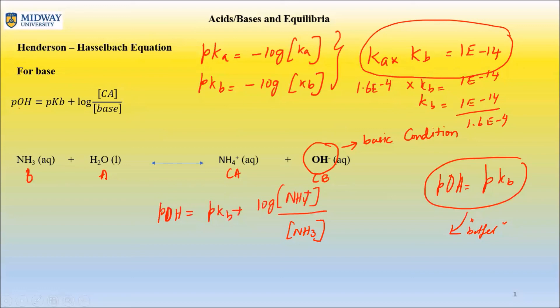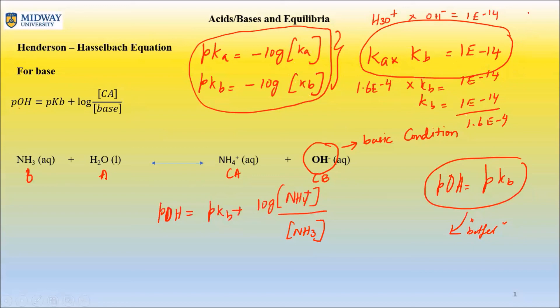All of that may seem like Greek and Latin now, but we will come back to it. I have circled every equation you do not have to memorize. To find pKa, take the negative log of Ka. To find pKb, take the negative log of Kb. Ka × Kb = 1×10⁻¹⁴, which is very similar to [H3O+] × [OH-] = 1×10⁻¹⁴. We'll stop this video here and I will introduce Henderson-Hasselbalch and buffer in more detail in the next video.